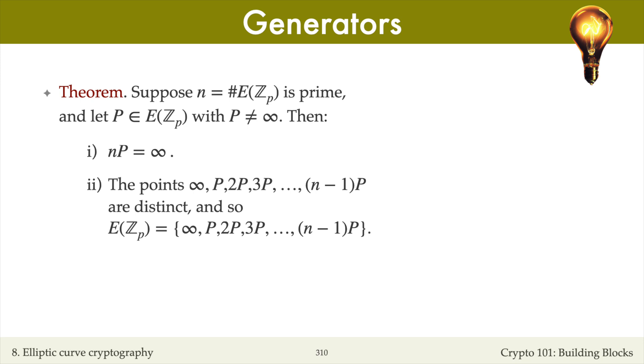Since the curve has n points in total, and these are n points on the curve, these points must be the set of all points on the elliptic curve. Thus, the set of rational points on E is the set 0P, 1P, 2P, up to n minus 1 times P.